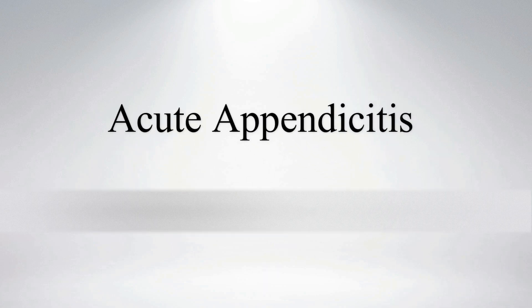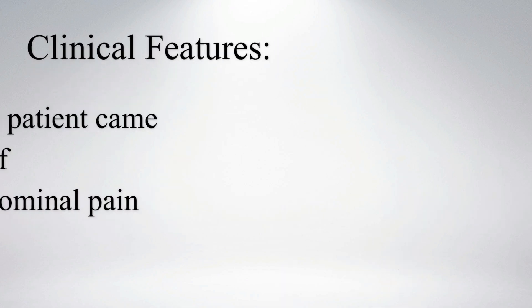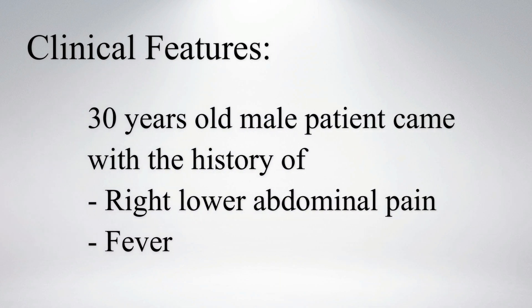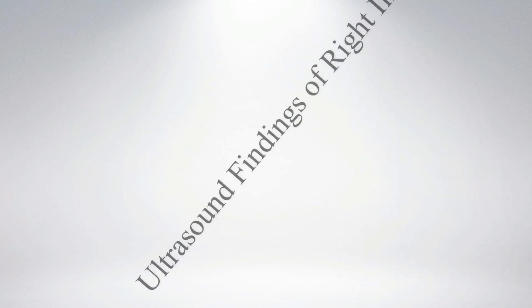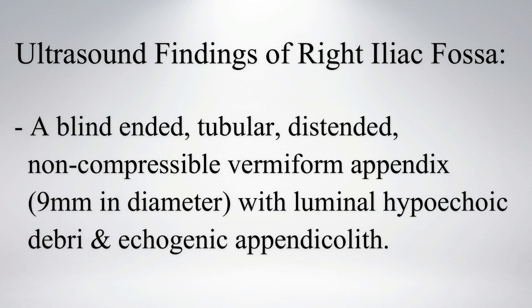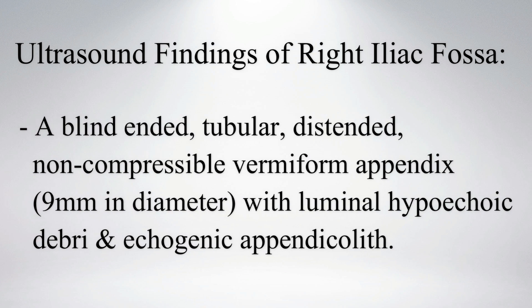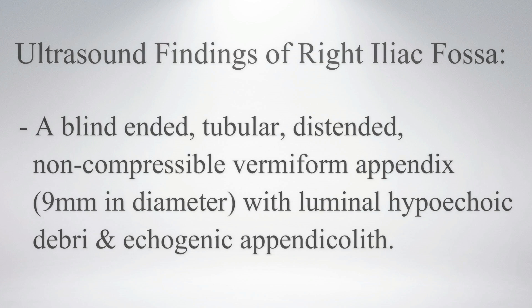Today we will see a case of acute appendicitis. This male patient came with a history of right lower abdominal pain and fever. On ultrasound, a blind-ended tubular distended non-compressible vermiform appendix measuring about 9 mm in diameter with luminal debris and echogenic appendicolith are noted at the right iliac fossa.